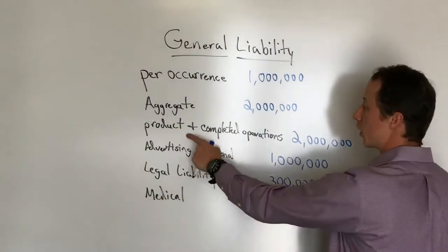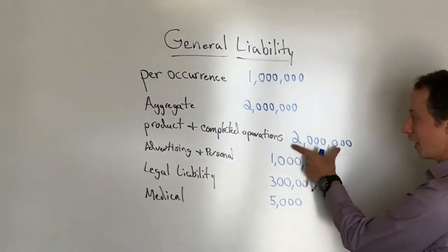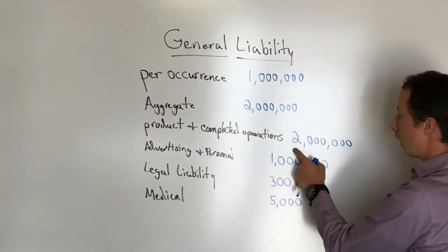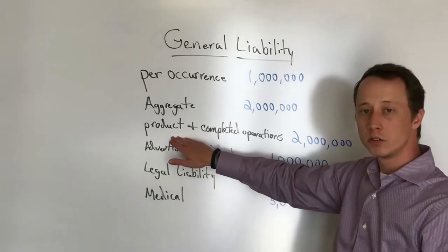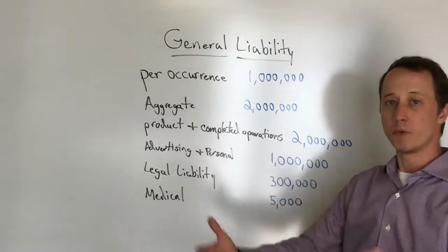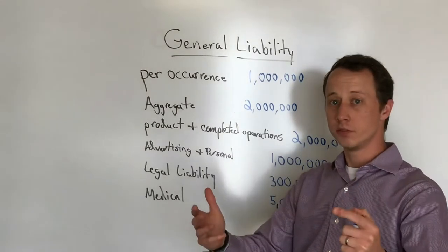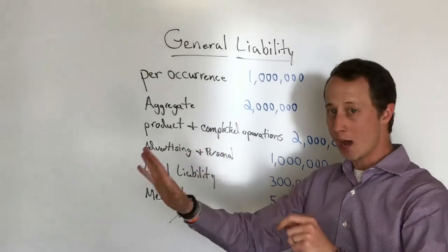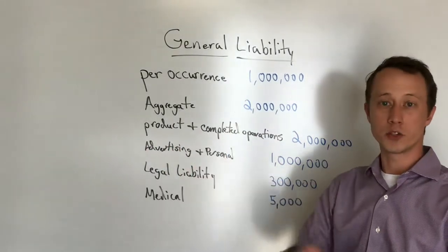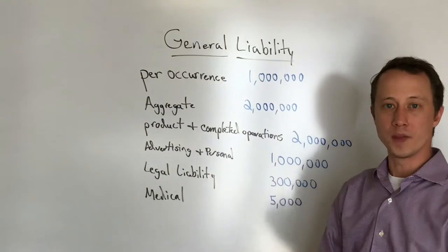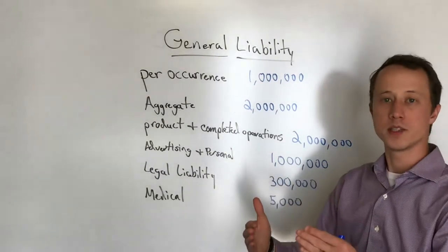You will also see a section break out for products and completed operations. That is usually an aggregate limit as well at two million dollars. Products and completed operations is after the services have been rendered. So if I am an electrician and I go out and perform work, the job's done, I've been paid, I leave, and then two weeks later there's a fire in the home that deems me liable — products and completed operations is what plays into that for you.